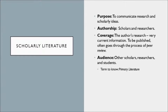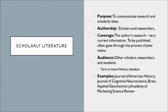Of particular importance is the term primary literature. Primary literature means this is someone's original reporting of phenomena they have observed. In the sciences, this means experiments a researcher has conducted themselves. In other fields, for example in history, this might be letters written by an author or original correspondence between two people — when someone is documenting their original observations. Examples include the Journal of American History, Journal of Cognitive Neuroscience, and Brain.